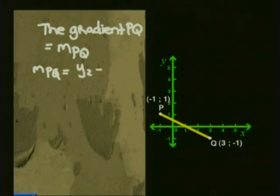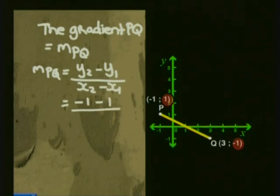If you work this one out starting with Q's values, you will get negative 1 minus 1 divided by 3 minus negative 1.